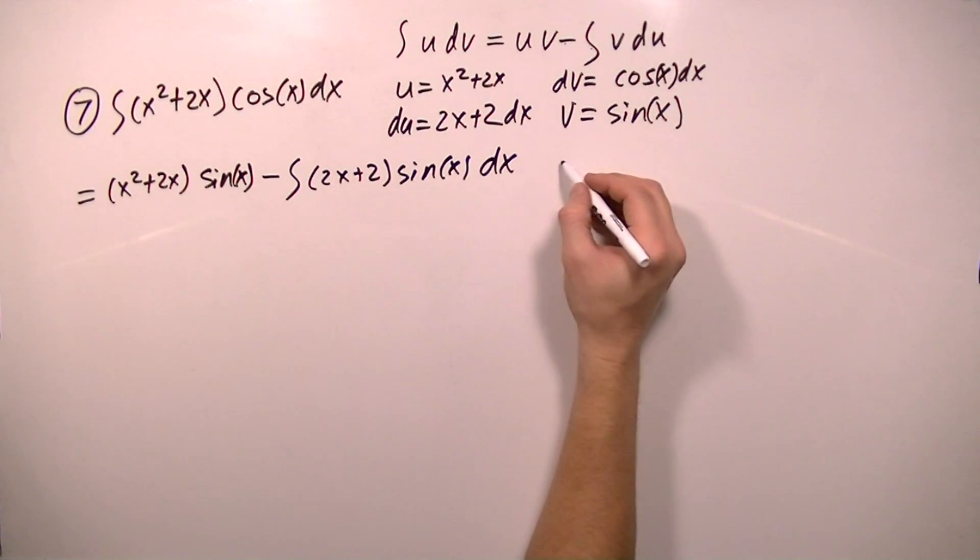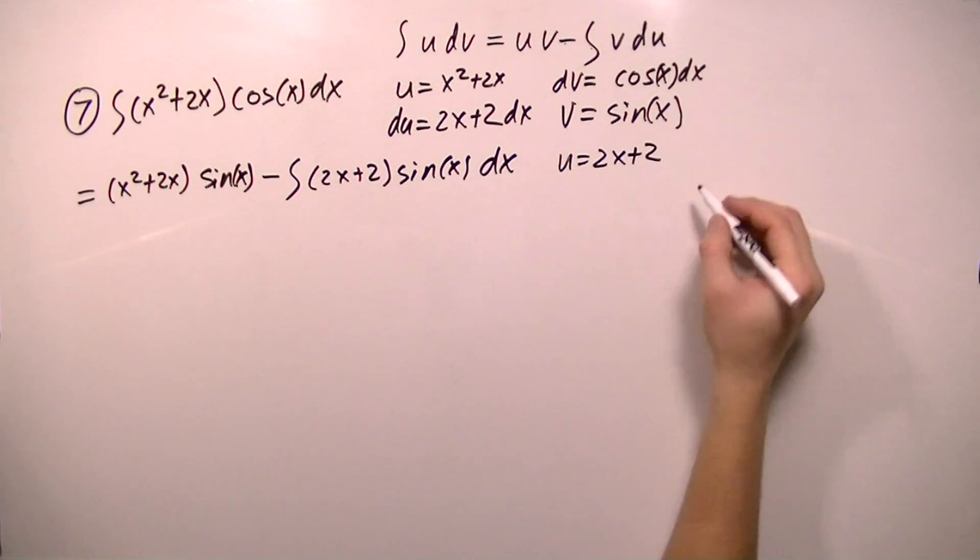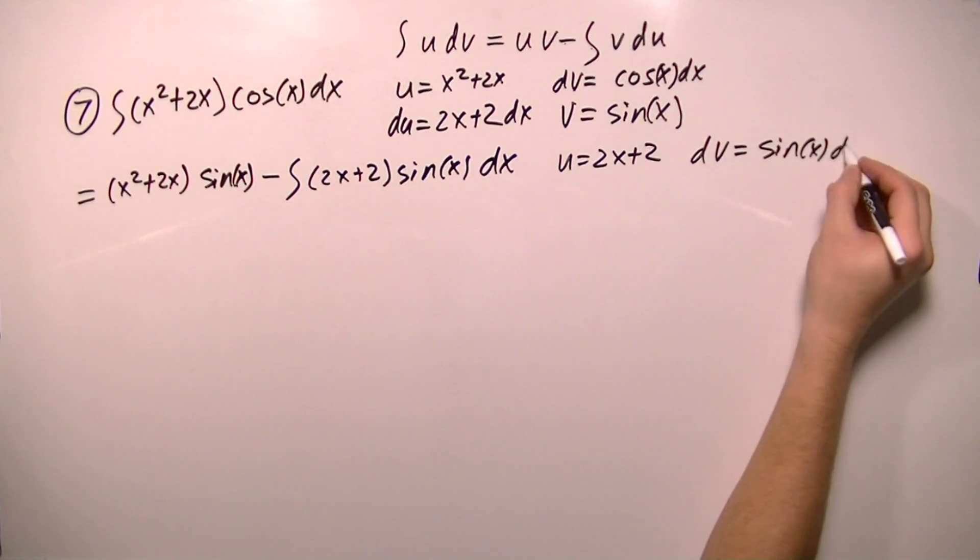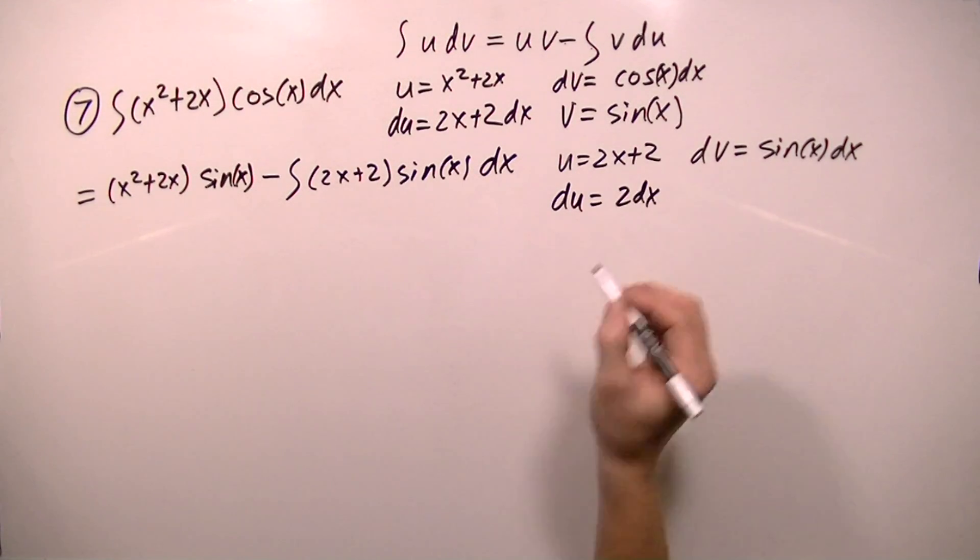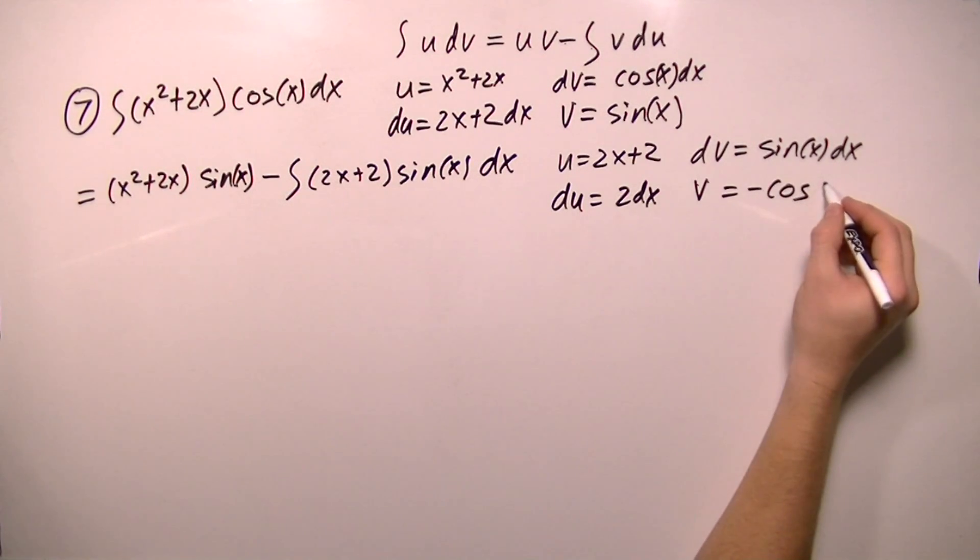So here I'm going to set u equal to 2x plus 2, and dv is going to equal sine x dx. So that du will equal 2 dx, and then v will equal the integral of this, which is negative cosine x.